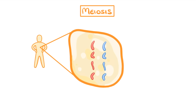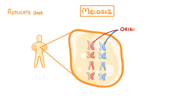Getting back to meiosis, the first step is to replicate all of the cell's DNA by replicating all of these chromosomes. This doesn't form entirely new chromosomes as such — it just adds an extra arm to each of the chromosomes we already had, so that they all become an X shape like this, with one arm being the original chromosome and the other arm being the copy.